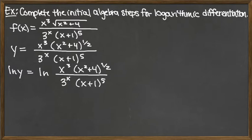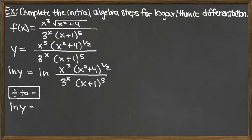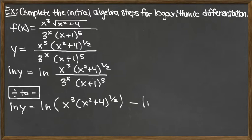The algebra step we need to do first is handle the natural log of a fraction, so we're going to change division to subtraction. The natural log of y on the left equals the natural log of the top — which is x cubed times x squared plus 4 raised to the one-half power — minus the logarithm of the bottom, which is 3 to the x times x plus 1 to the fifth.